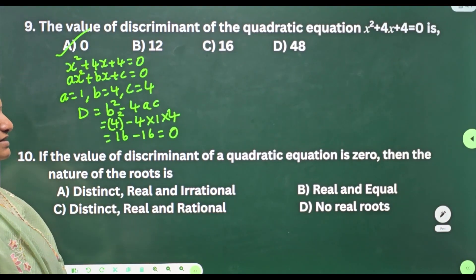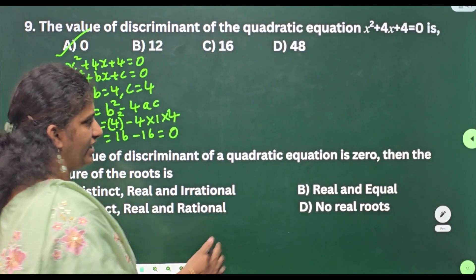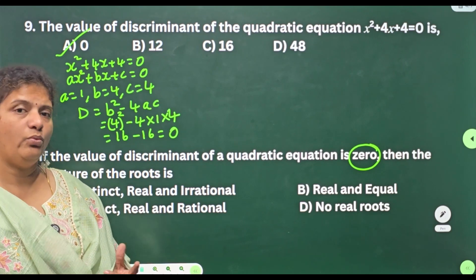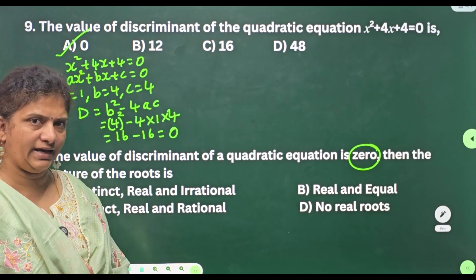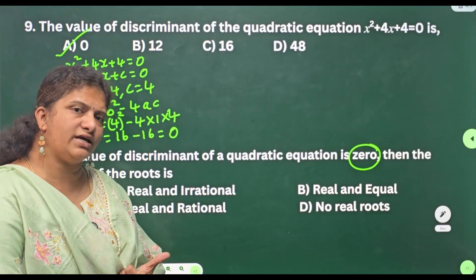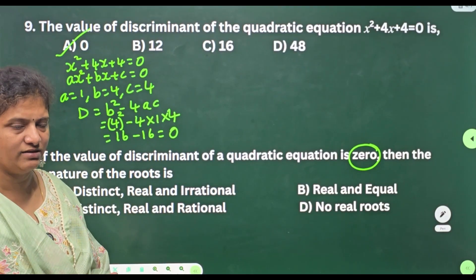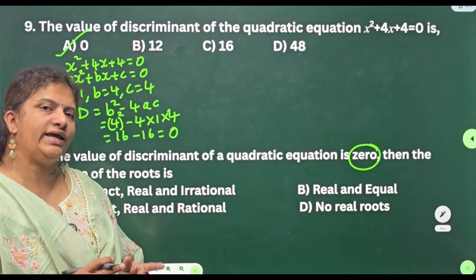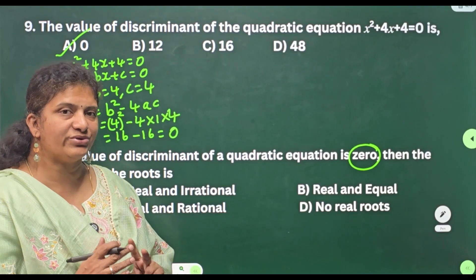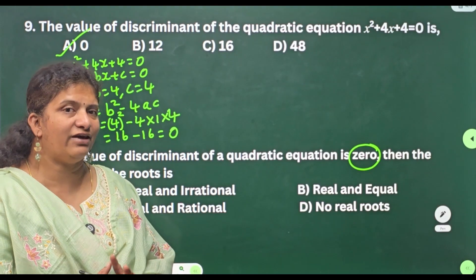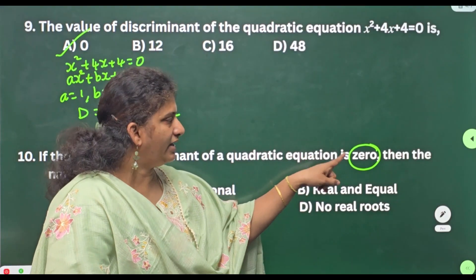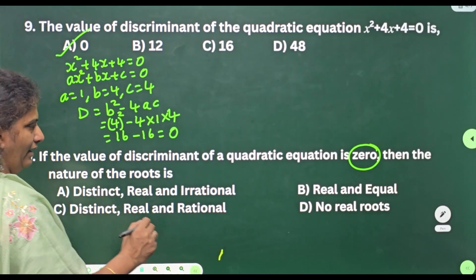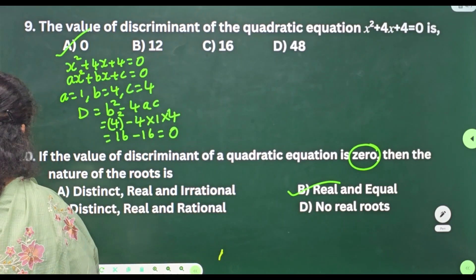Tenth one: if the value of discriminant of a quadratic equation is 0, then the nature of the roots is — we know there are three cases. If D = 0: two real and equal roots. If D < 0: no real roots. If D > 0: two real and distinct roots. You should remember these three cases carefully. Here discriminant is equal to 0, that means two real and equal roots. Option B.